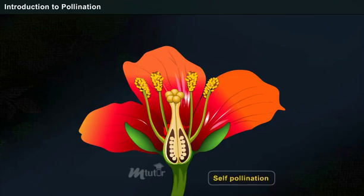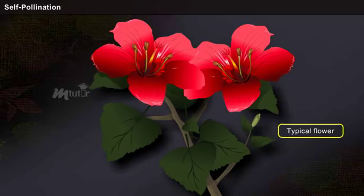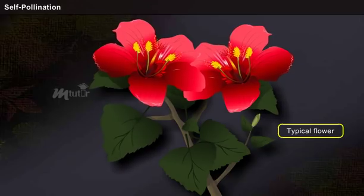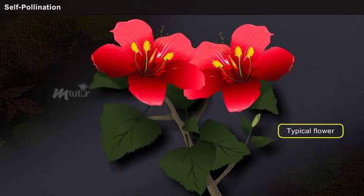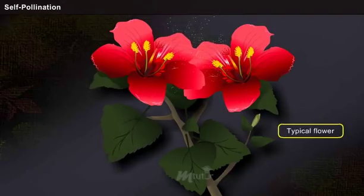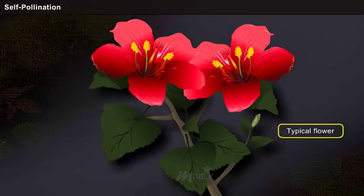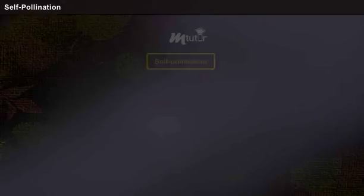In this lesson, we will discuss self-pollination in detail. Self-pollination is the transfer of pollen grains from the anther to the stigma of the same flower, or a genetically similar flower of the same plant.